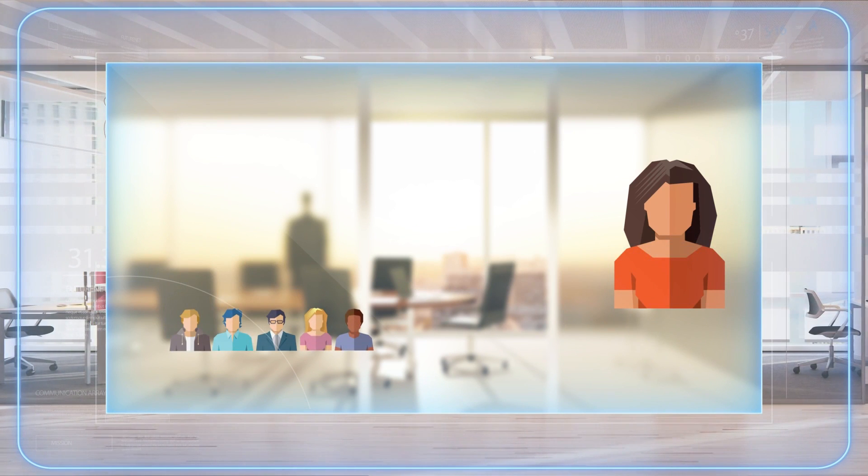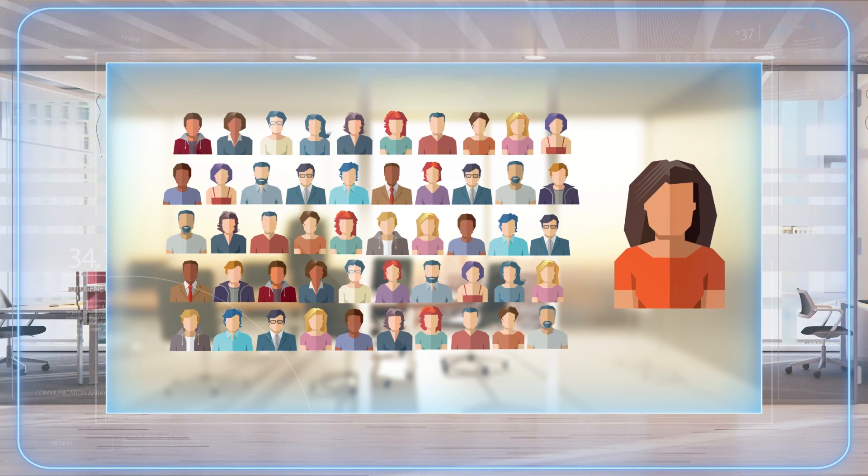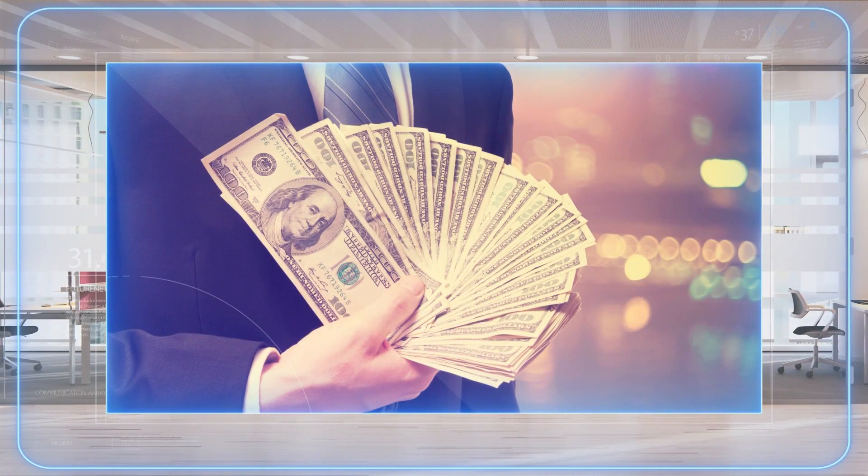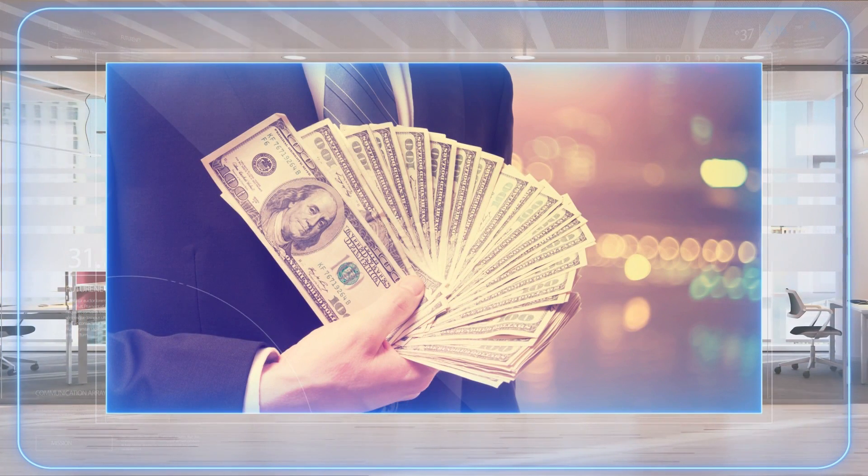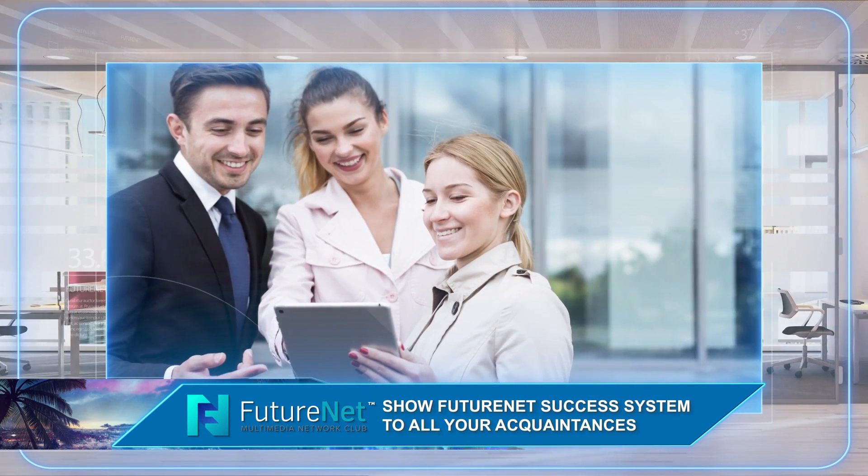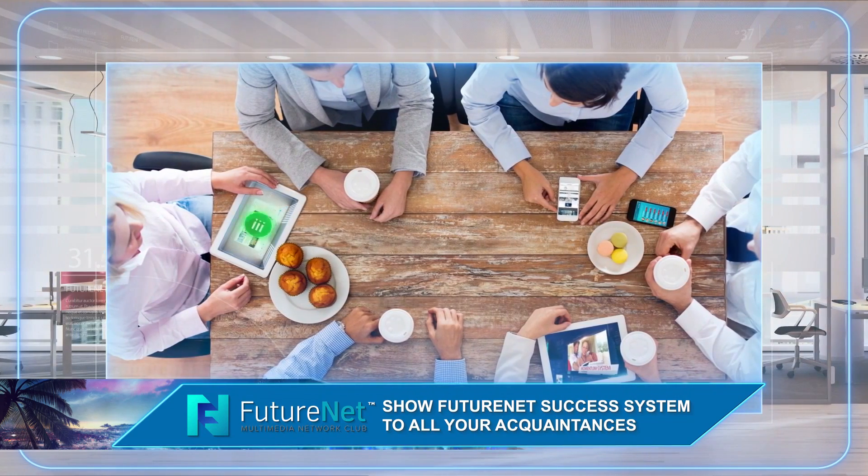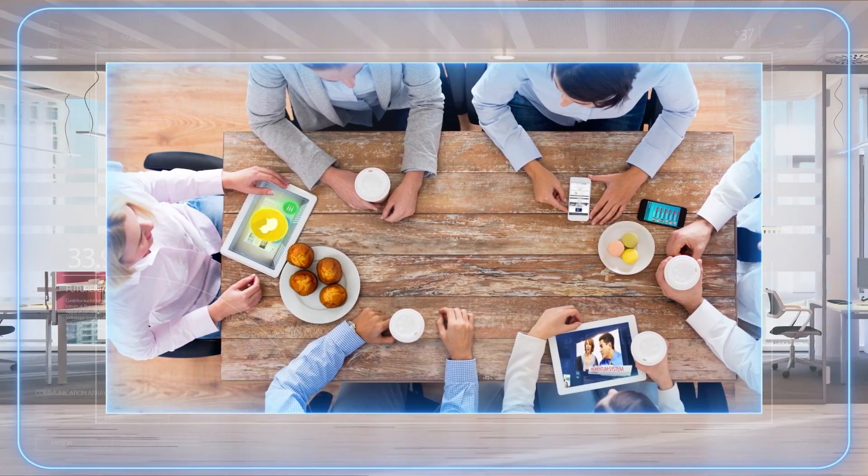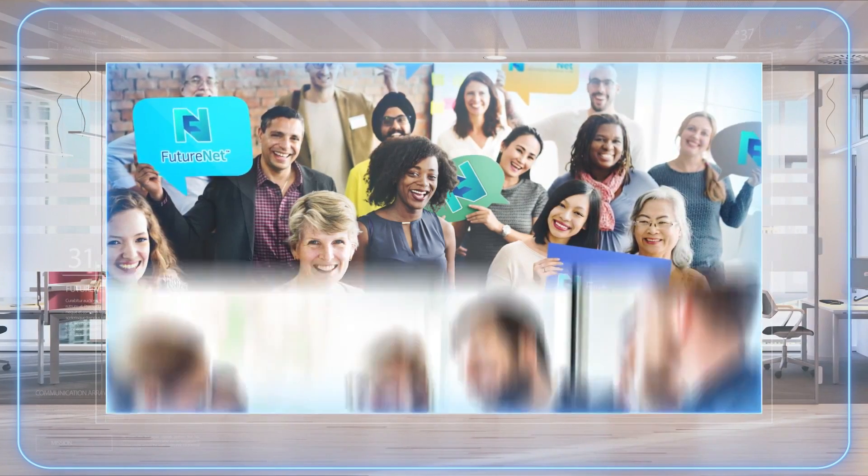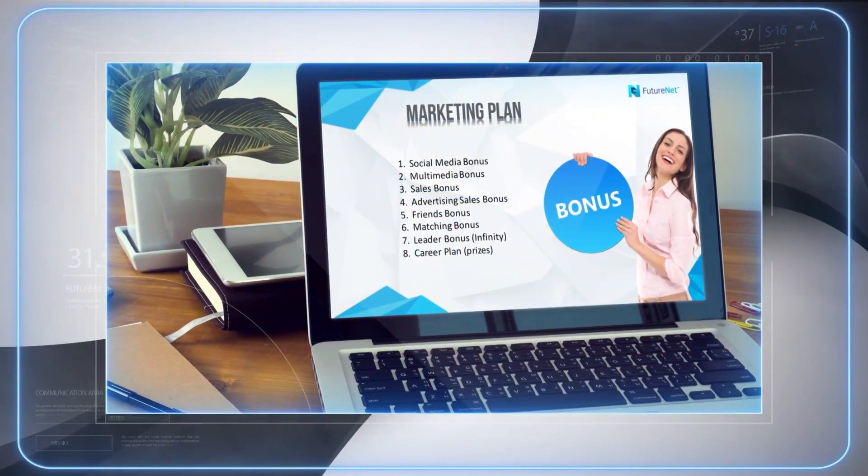Imagine that you have 5, 10, 20, 30, or 50 personal business partners. Matching bonus is an unlimited source of additional income. Certainly, it will be the biggest part of your proceeds. All you have to do is show FutureNet's success system and video presentation to each of your acquaintances. Advertise and make this presentation available online and offline everywhere you can. By doing so, you will get to know many new people and gain partners for your business. This was a short presentation of FutureNet's marketing plan.